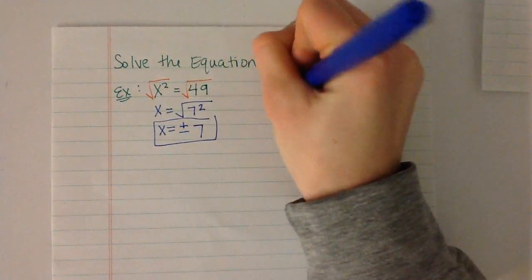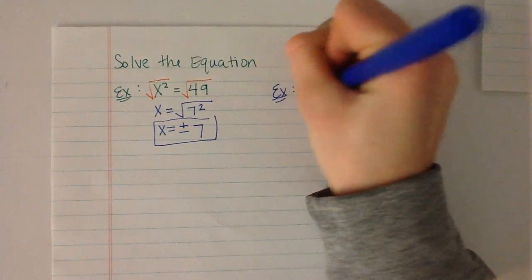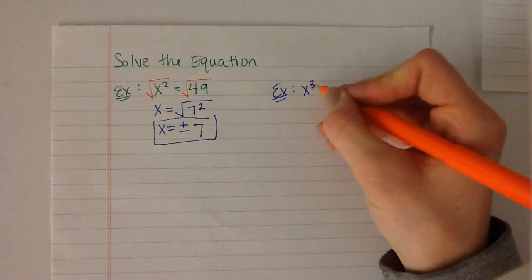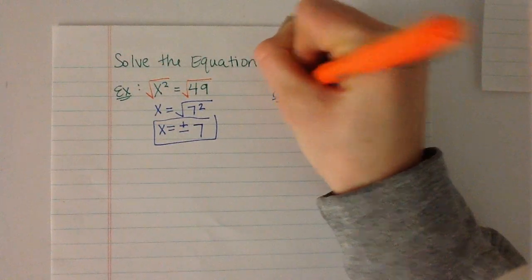Our next example, if we have x cubed equals negative 27, so we want to solve. So to get rid of the cube, we have to take the cube root of both sides.